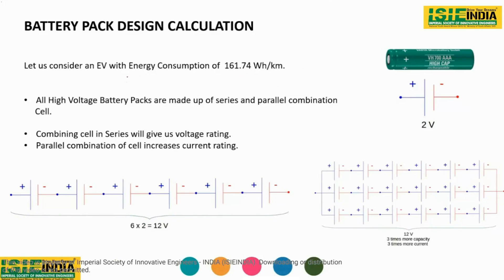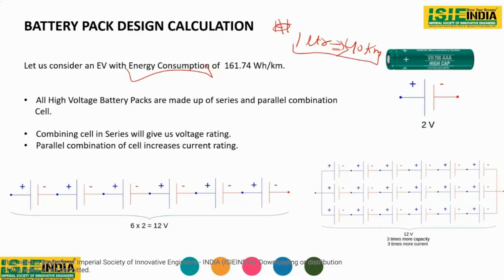An important term in electric vehicles is energy consumption. In conventional petrol vehicles, we talk about average mileage — for example, a bike covering 40 kilometers per liter of petrol. This is the energy efficiency of the vehicle: in one liter of fuel, it covers a distance of 40 kilometers.